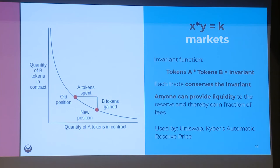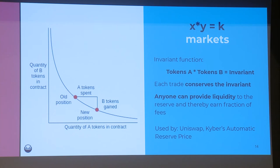Then we have a very popular mechanism coined by Vitalik: the x times y equals k markets, probably best known as Uniswap markets. These markets use a function where tokens_A × tokens_B always equals some constant k. This gives you a curve, and trading is super easy — the only rule is you must always stay on the curve. If you start at a point and want to spend a certain amount of token A, you get the corresponding amount of token B from it.